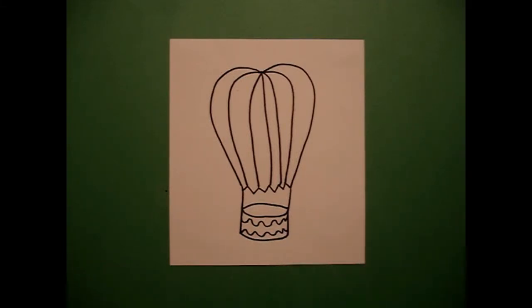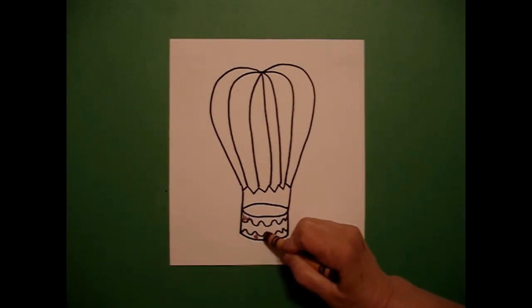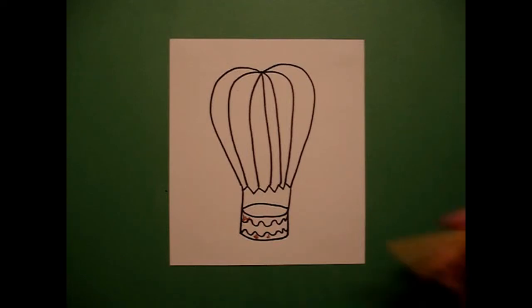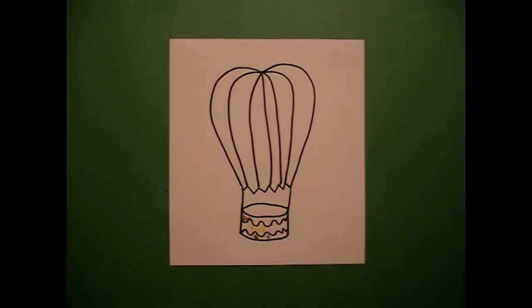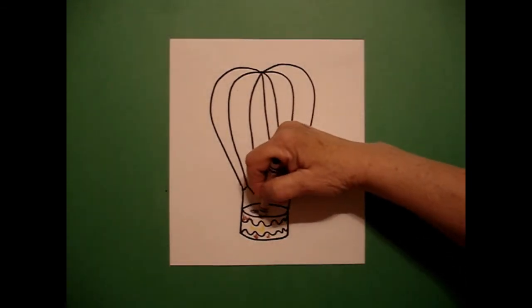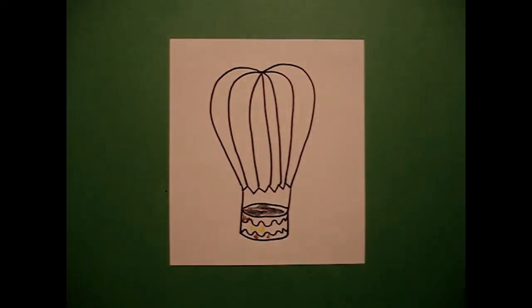Now we're ready to color. I want my balloon to be very colorful, but first I'm going to do the basket part, so I'm going to do these sections brown. I'm going to do the inside section yellow, and very important, I'm going to color this black so that this space looks like it's the inside of the basket.